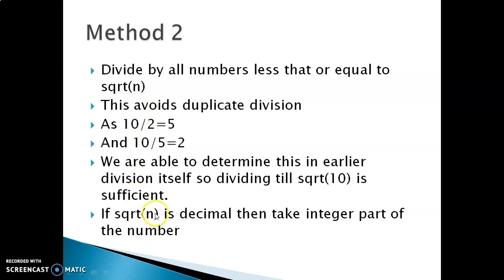Now one question will come in your mind: if the square root of n is a decimal number, that means it is a floating point number, then we have to just take the integer part of the number and perform division by that.